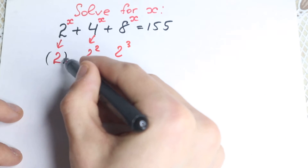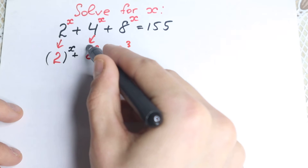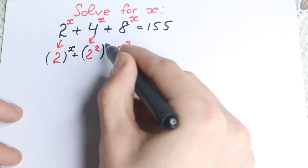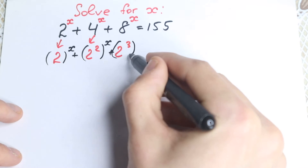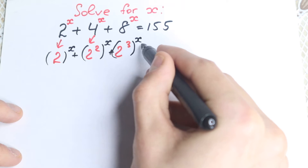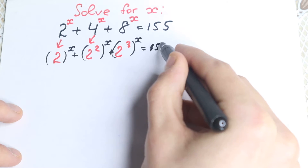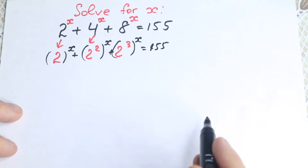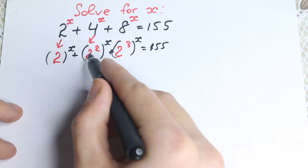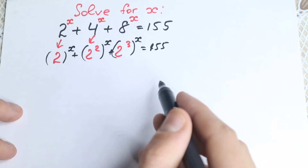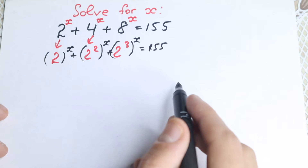Because if we write it this way, we'll have the same bases. So we have 2 to the power x, plus 2 squared to the power x, plus 2 cubed to the power x, equal to 155. We just rewrote using 2, 2 squared, and 2 cubed — this is our first step toward the solution.